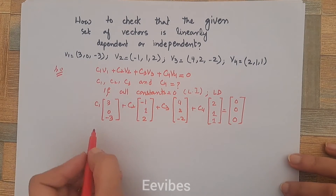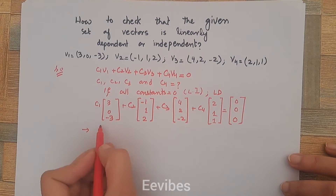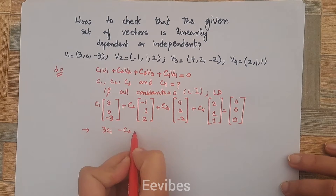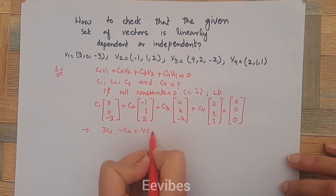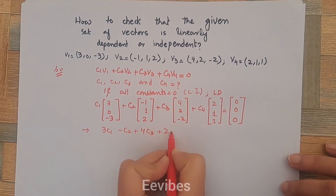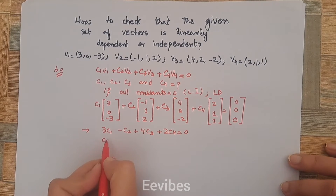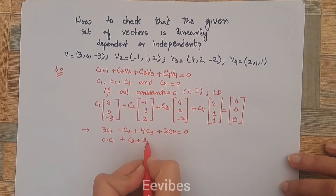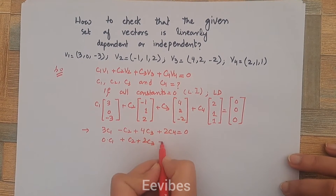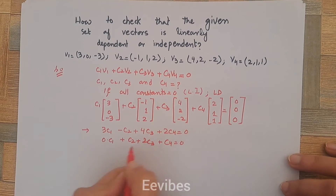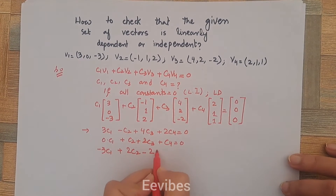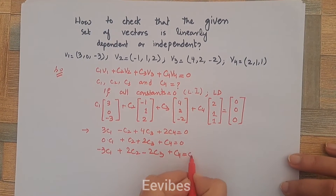The next step is to construct the linear system of equations. This becomes: 3c1 - c2 + 4c3 + 2c4 = 0; then 0*c1 + c2 + 2c3 + c4 = 0; and the last equation is -3c1 + 2c2 - 2c3 + c4 = 0.